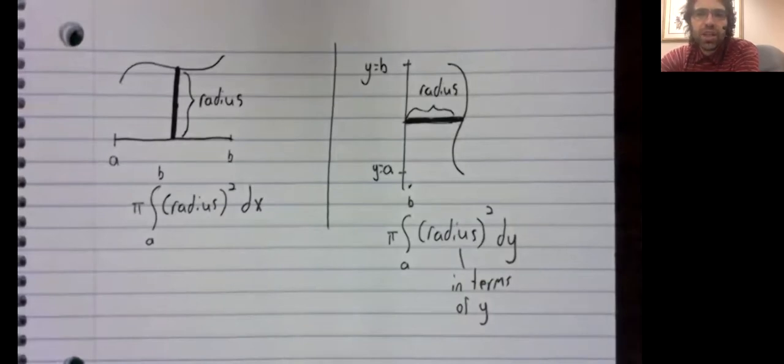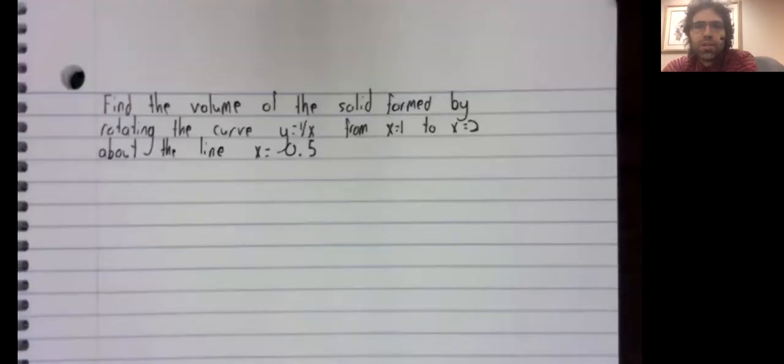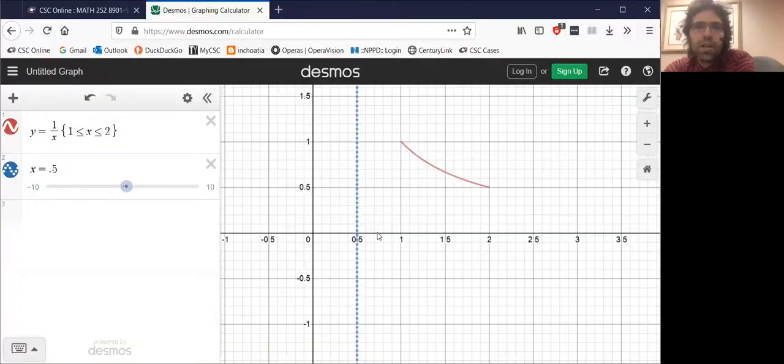Now that we've stated the idea, let's dive right into an example. In particular, let's find the volume of the solid formed by rotating the curve y equals one divided by x from x equals one to x equals two about the line x equals one half. And at this point in our career, we probably know more or less what this curve one over x looks like. But let's go ahead and take a look at the curve.